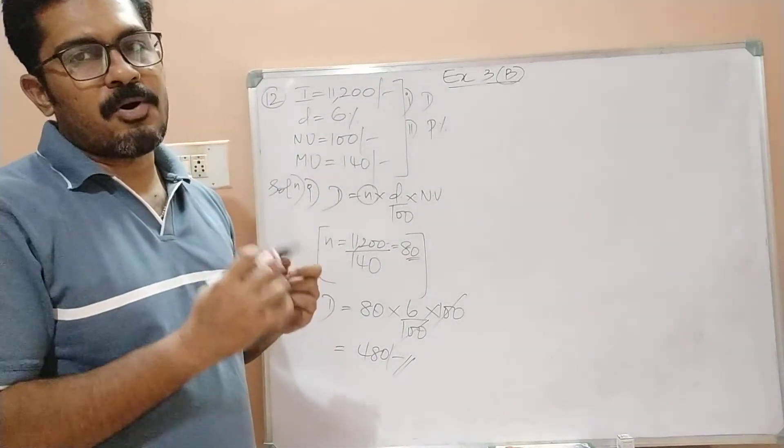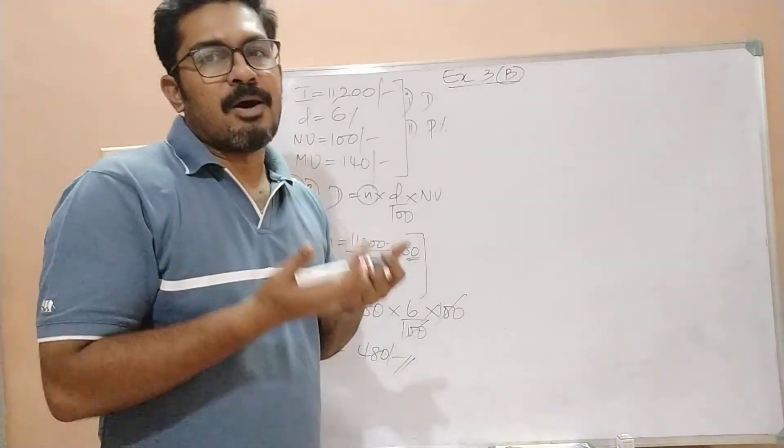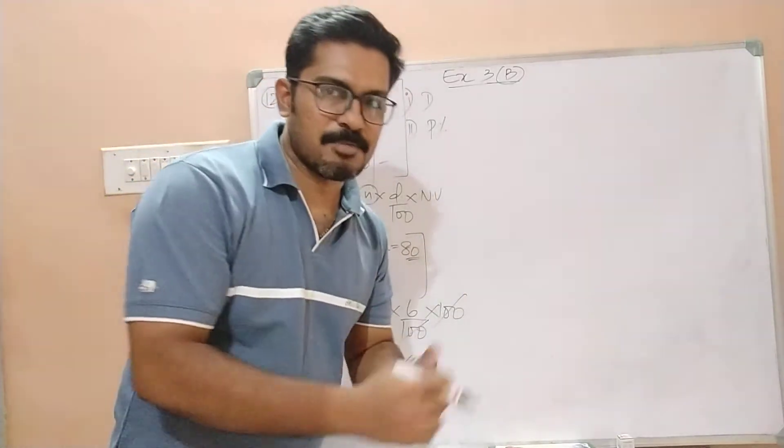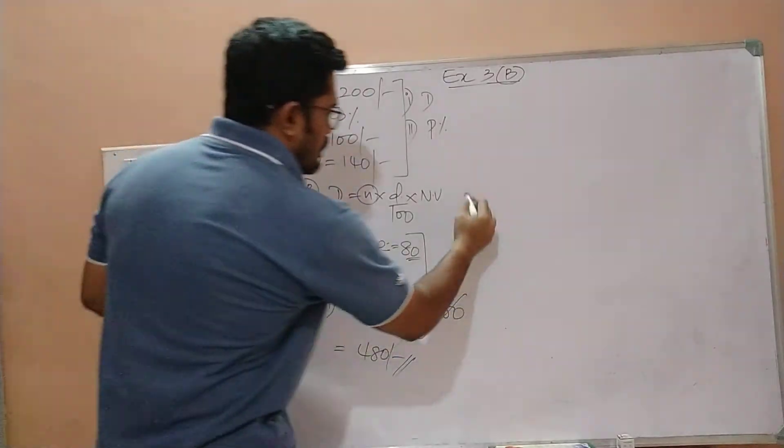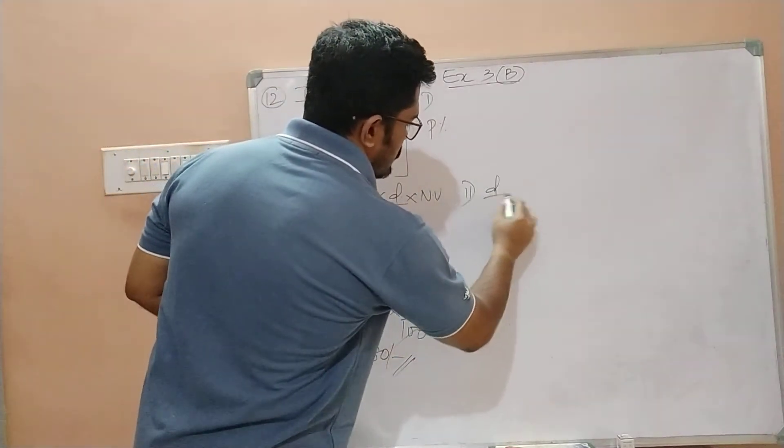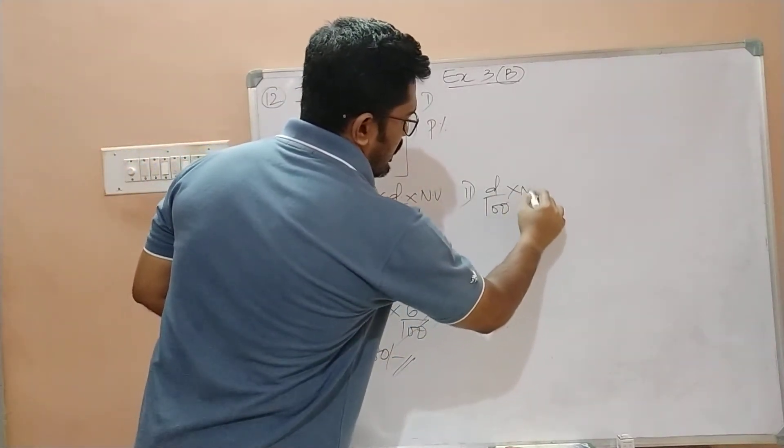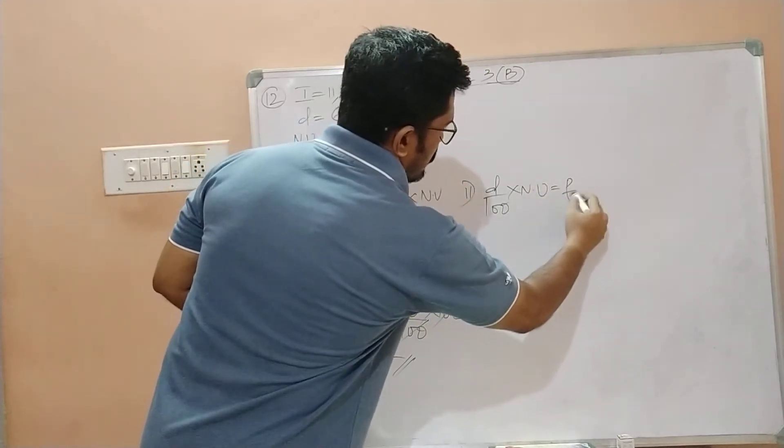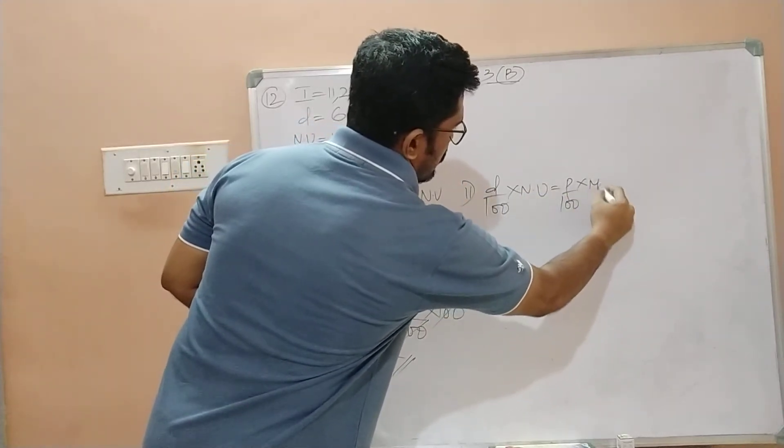Percentage return on his investment means what? How much is the profit percentage he got on his investment? Simple. So guys, we can use the formula D by 100 into NV is equal to P by 100 into MV.